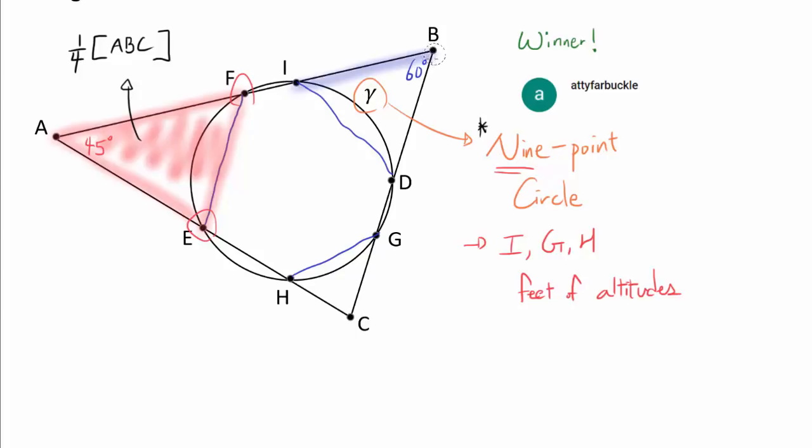Now, what about the triangle BID? How about this one? We cannot do the same thing and say it's 1/4 because I isn't the midpoint of side AB. If we had this triangle, then yes, it's 1/4, but it's smaller than 1/4. So how do we calculate it in this case?